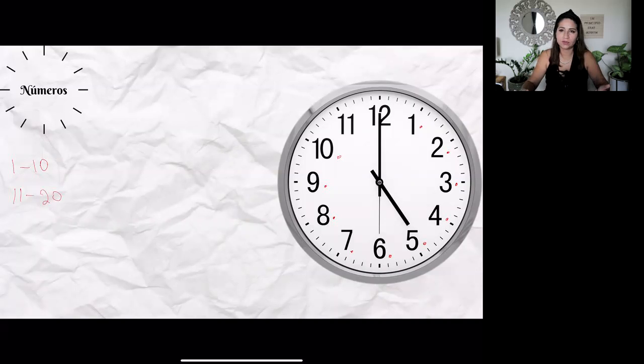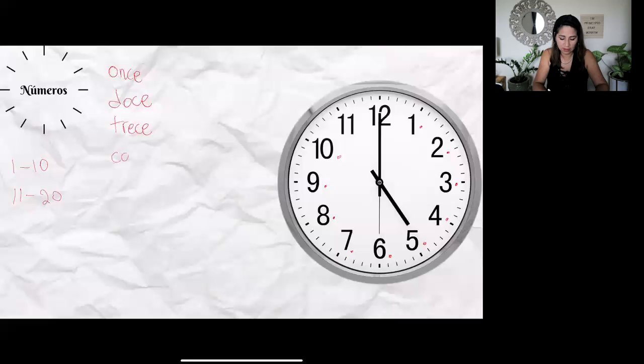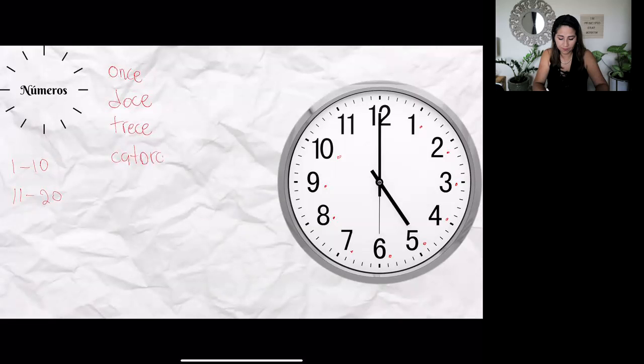The clock only goes up to twelve when it comes to hours, but you do need to know numbers above twenty, actually up to sixty at least, or fifty-nine if you want to tell somebody a specific time with minutes. But let's look at eleven to twenty now, so we have once, doce, trece, catorce, quince.